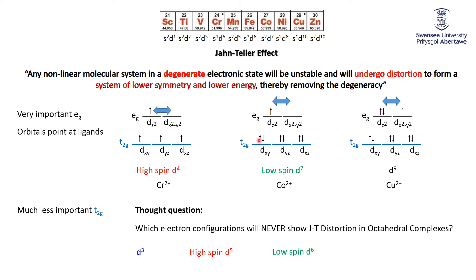Another configuration with no Jahn-Teller distortion is low spin d6, where all six electrons fill the t2g with nothing in the eg. Then d8, regardless of spin state: six electrons fill the t2g and one electron goes into each eg orbital — no ambiguity. And finally d10, where everything is completely filled — no degeneracy of any kind.